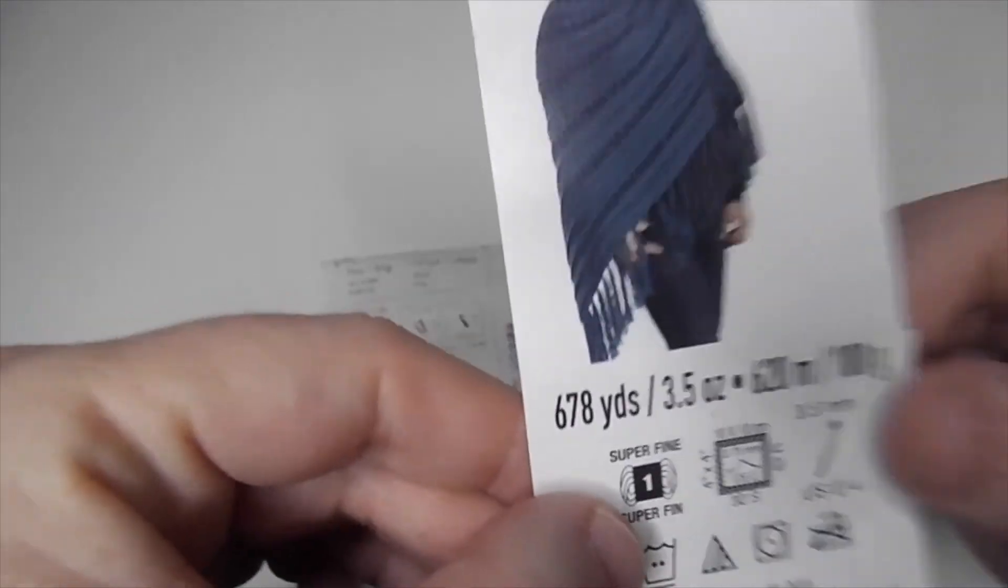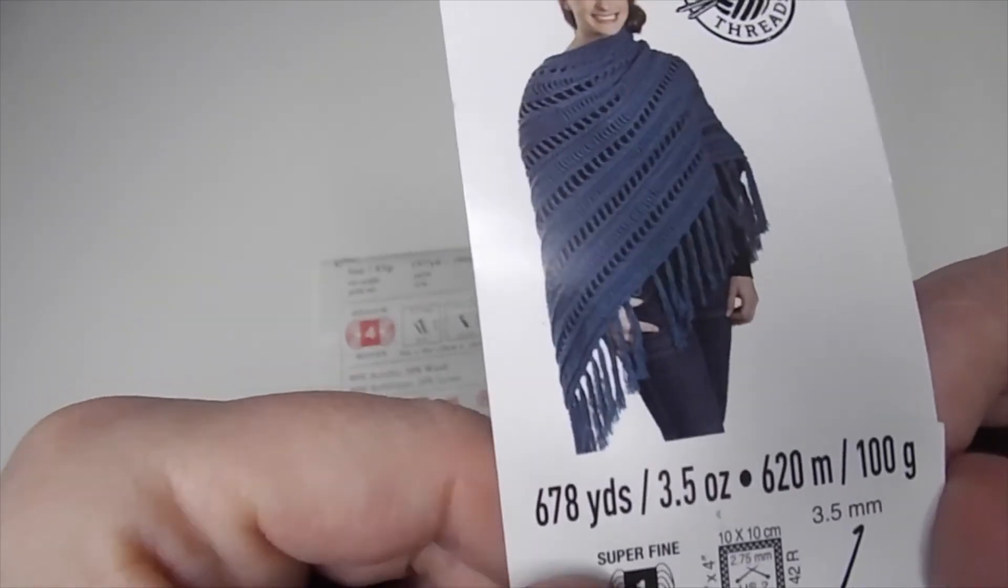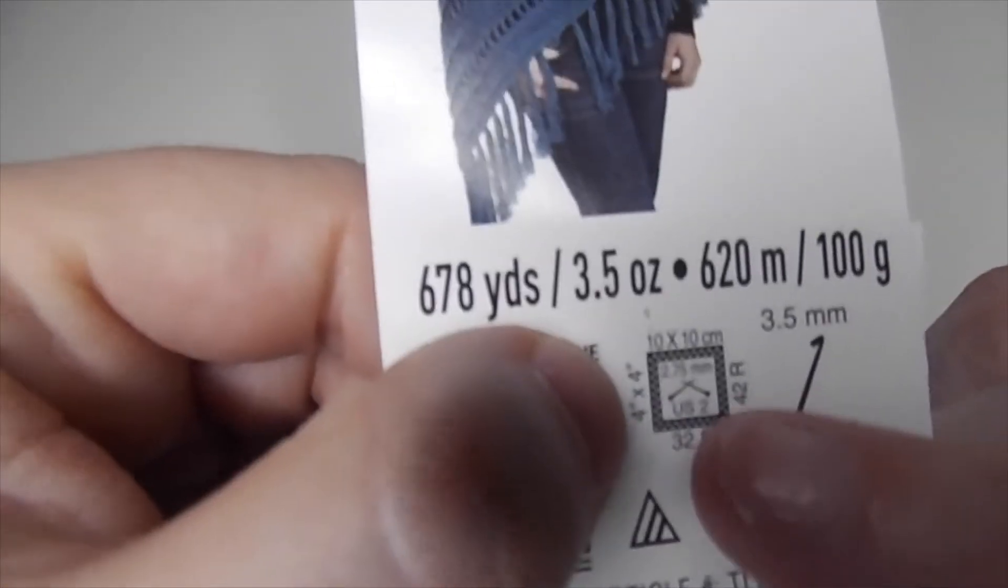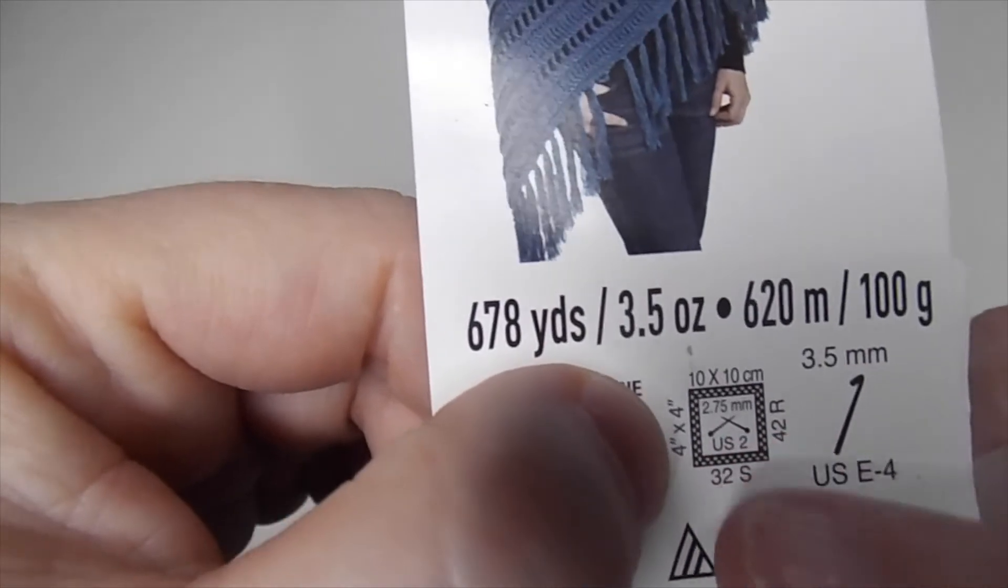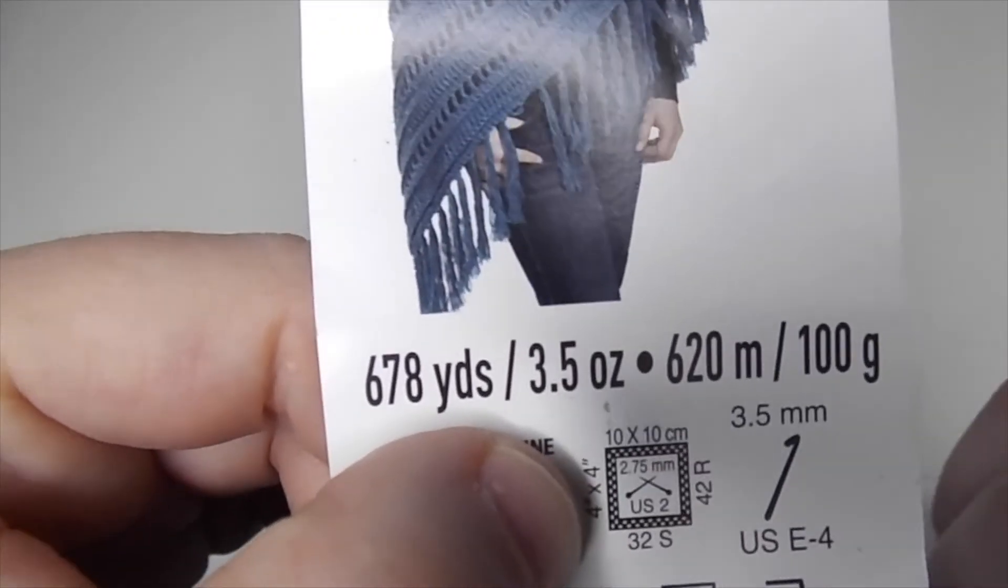But if you go here with this one, you just have it for knitting. If you use 2.75 millimeters, you will need a US 2, 32 stitches and 42 rows.